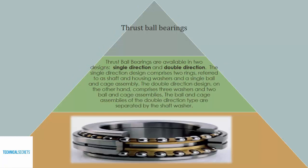Thrust ball bearings are available in two designs: single direction and double direction. The single direction design comprises two rings referred to as a shaft and housing washer, and a single ball and cage assembly. The double direction design comprises three washers and two ball and cage assemblies. The ball and cage assembly of the double direction design is separated by the shaft washer, as you can see here.